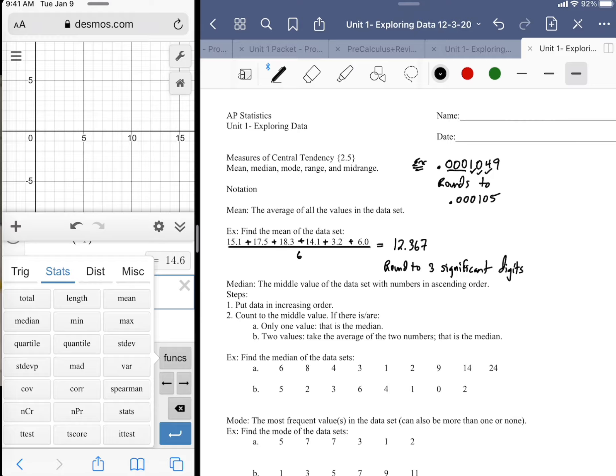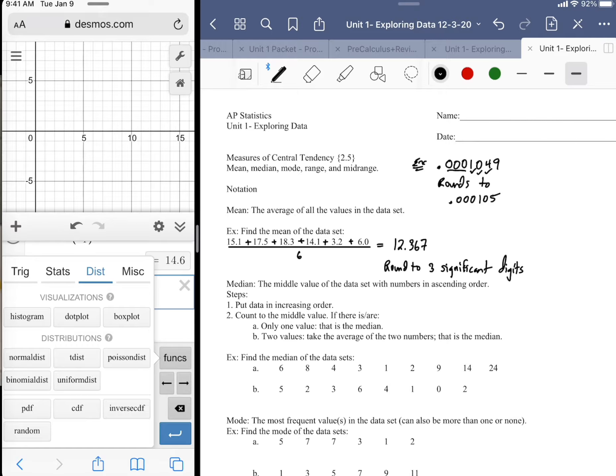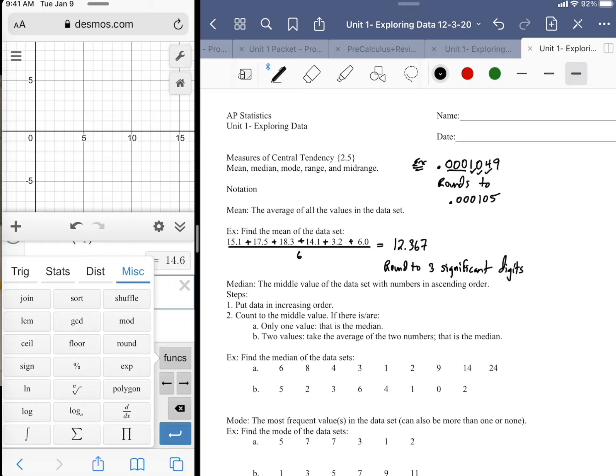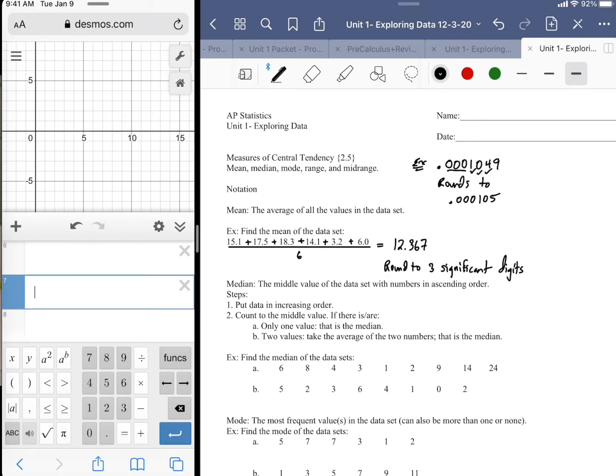So you go through the list here, you see a lot of different varieties, a lot of different options, total, length, mean, all that stuff. You won't find a mode. I honestly don't know why. I think maybe the programming is a little too tricky for Desmos.